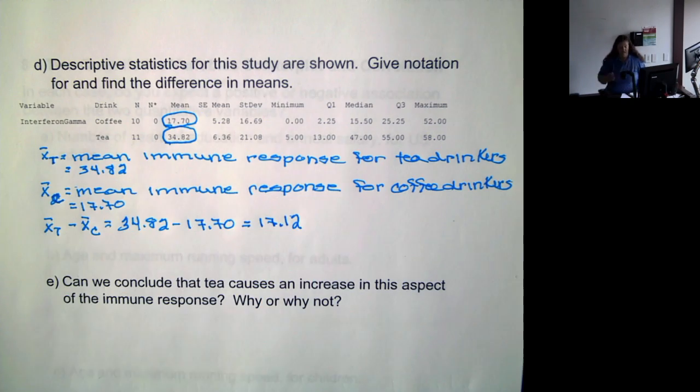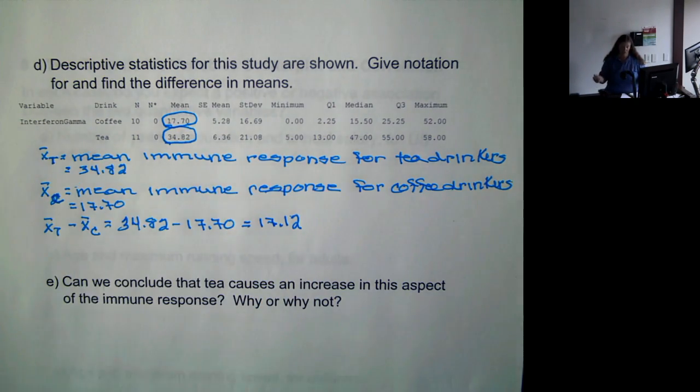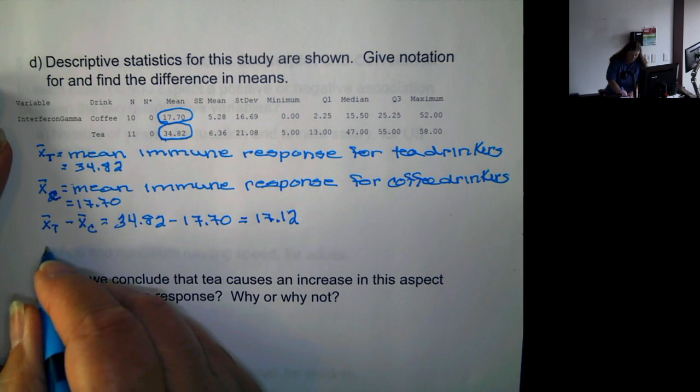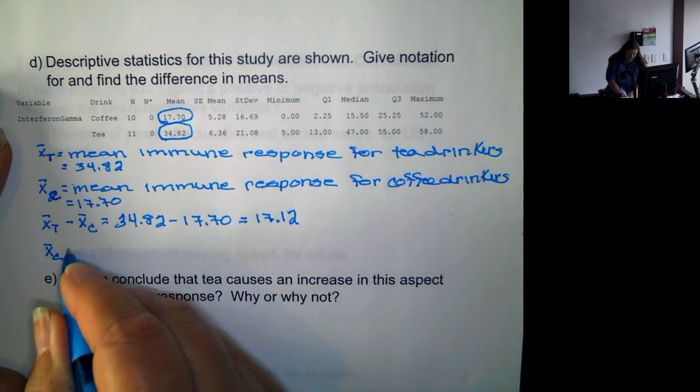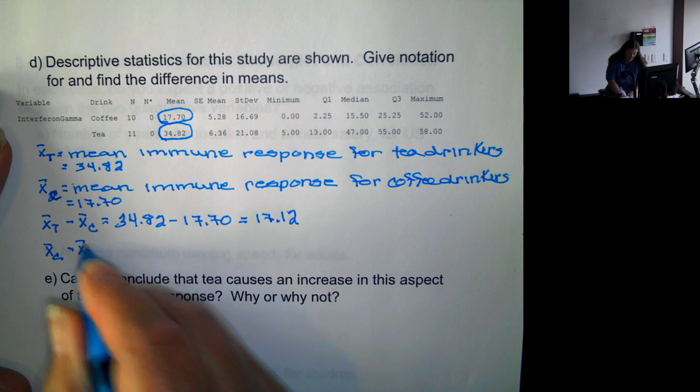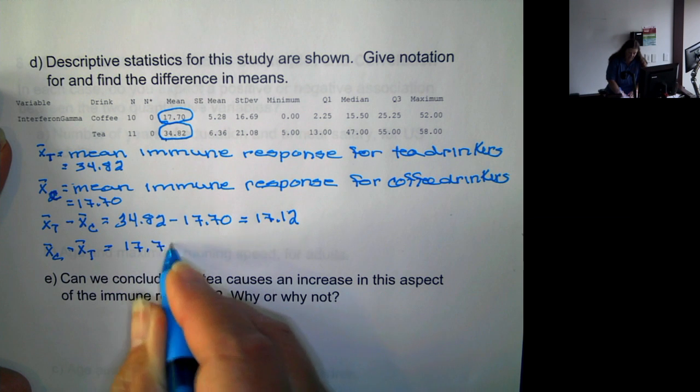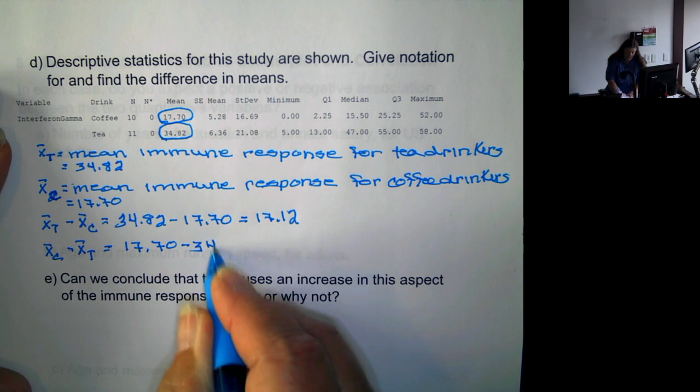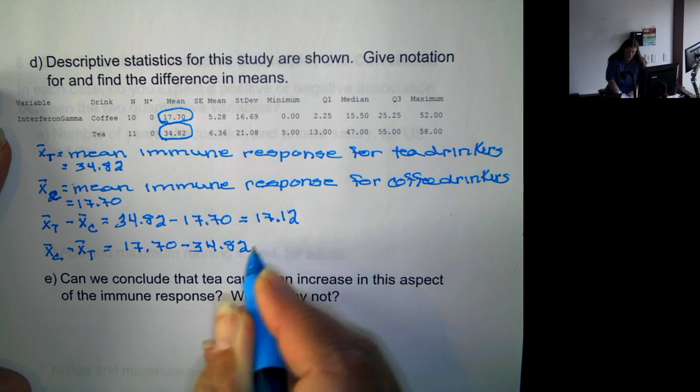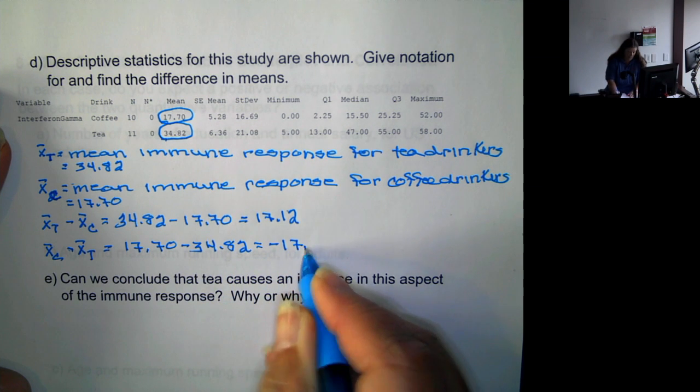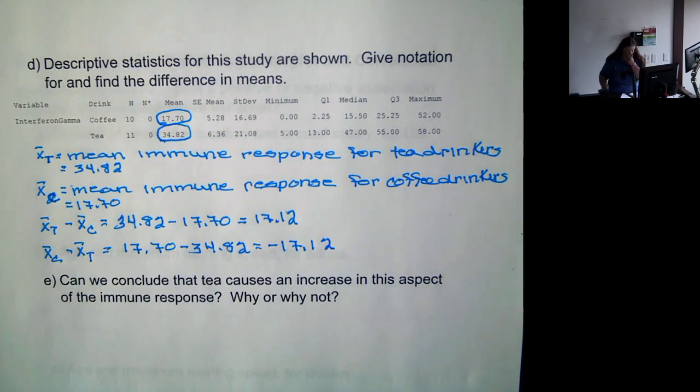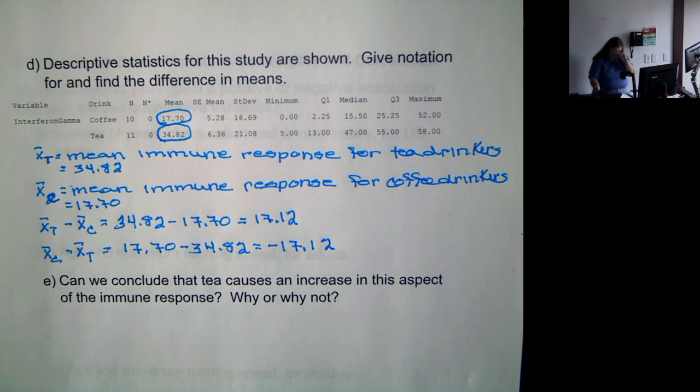We did not specify which direction we wanted the difference to be. So it's very possible you could do X bar sub C minus X bar sub T, which would be 17.70 minus 34.82, which would give us a negative 17.12. So both of these would be correct and it's okay for the difference to be a negative number. It's just saying that the number you subtracted was larger.